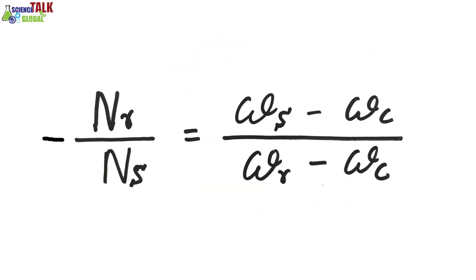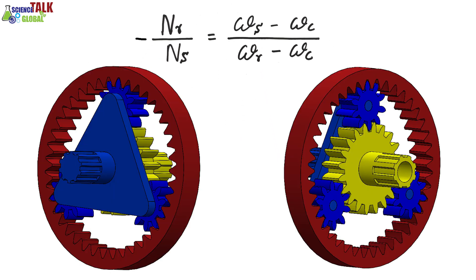This is the relationship between number of teeth of gears and the angular velocities of each gear in an epicyclic gear train. Nr is the number of teeth of ring gear. Ns is the number of teeth of sun gear. Omega s is the angular velocity of sun gear. Omega c is the angular velocity of planet carrier. Omega r is the angular velocity of ring gear.